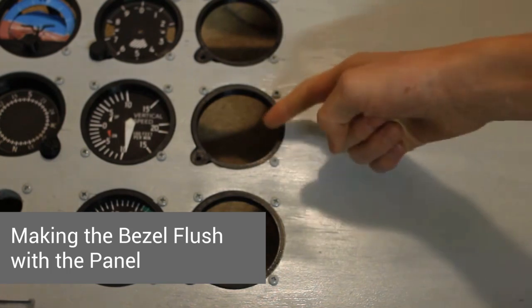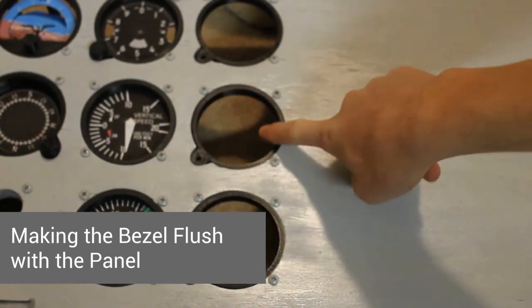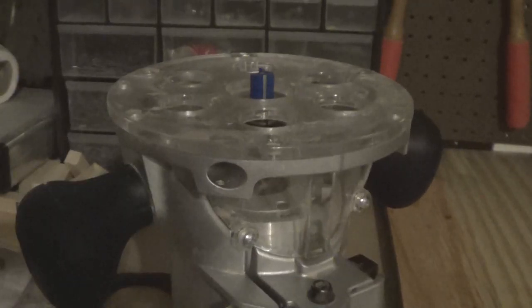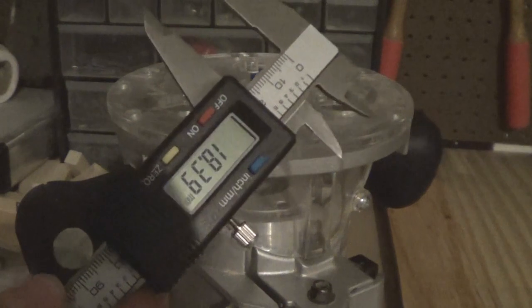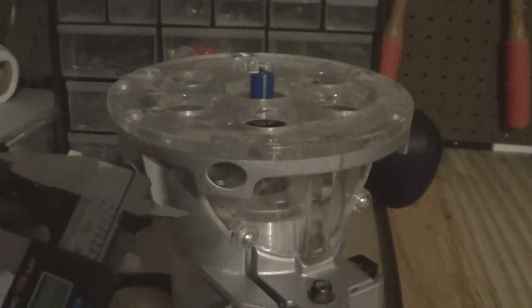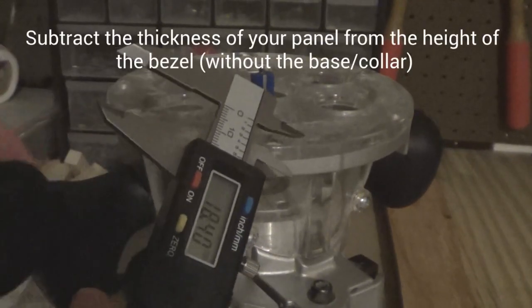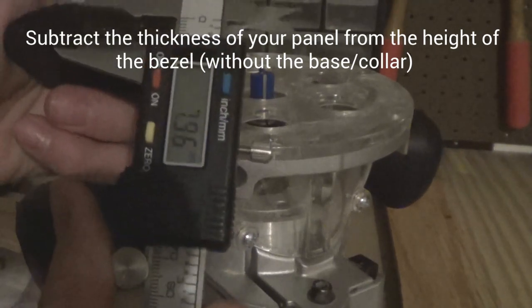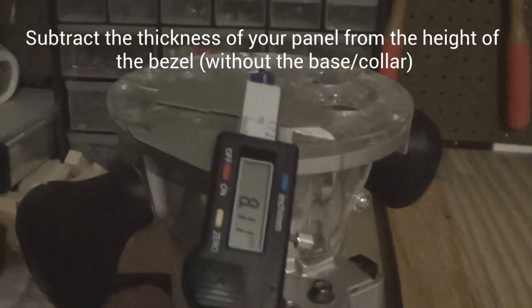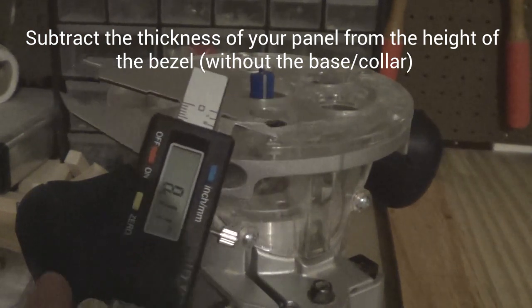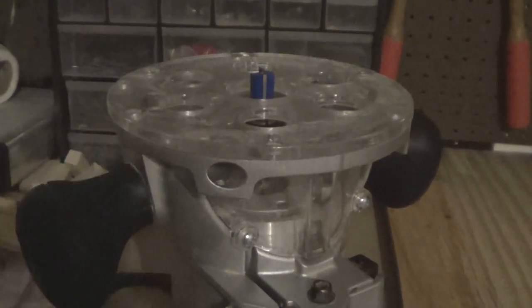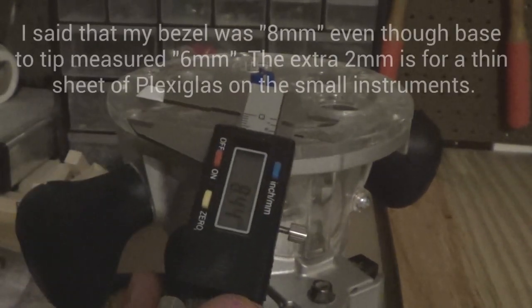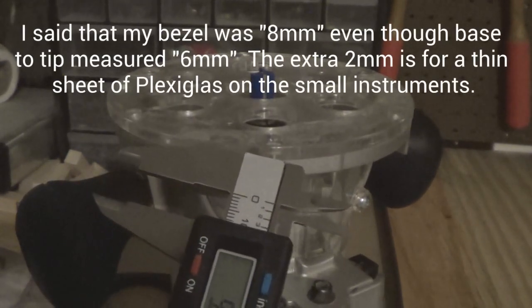First we're going to carve behind the panel to make it flush. To set the router, I found out the thickness of my panel which is 18.4mm, and then you subtract it by the thickness of the gauge. So it's about 8mm. So 18.4 minus 8 is 10.4. So once we find about 10.4, 10.5, we can set our depth on the router.